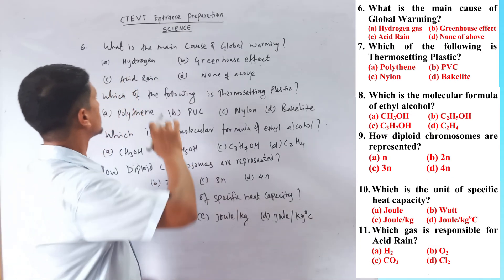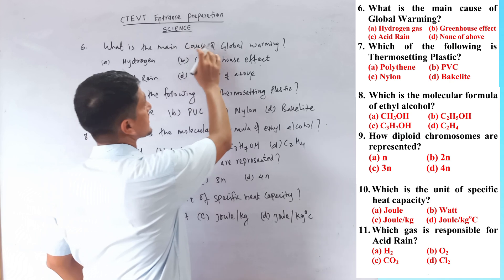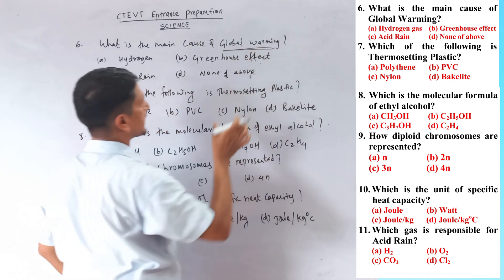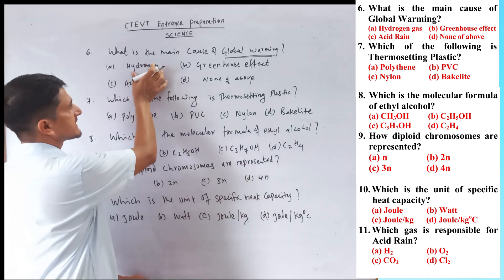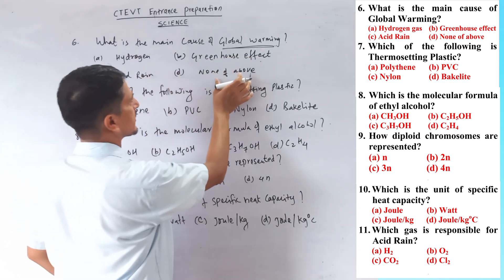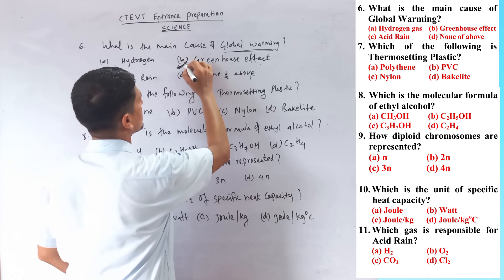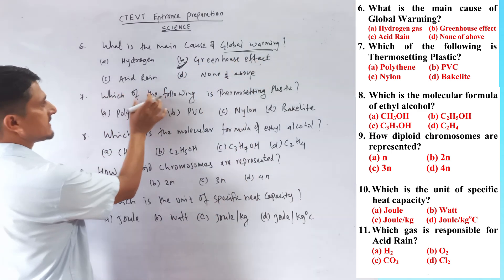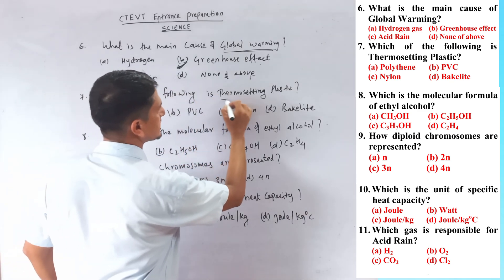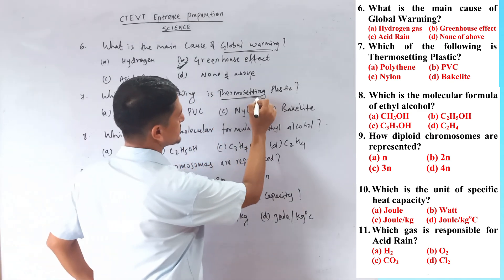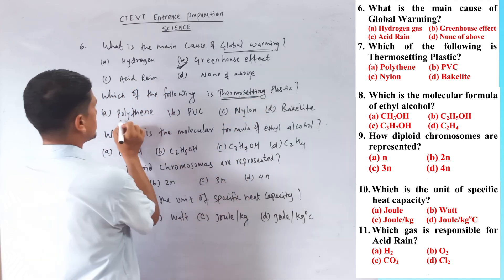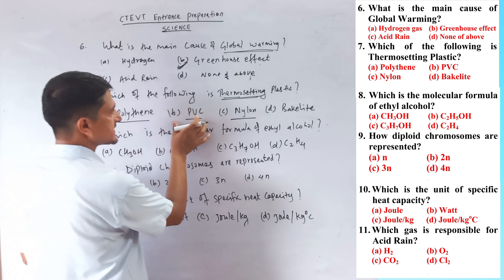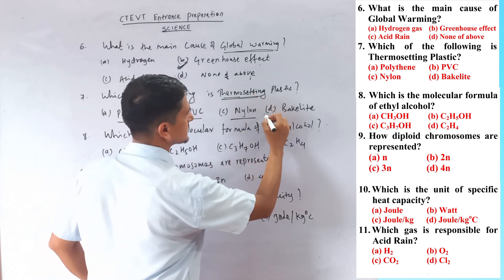Question number six: what is the main cause of global warming? Global warming is caused by the greenhouse effect. Question number seven: which of the following is a thermosetting plastic? Options include polythene, PVC, and nylon. The correct answer is Bakelite — it is a thermosetting plastic.